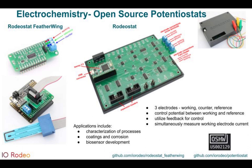So you might ask: what is a potentiostat? A potentiostat is a three-electrode electrochemical sensor. The idea is basically to control the potential between the working and reference electrodes using the counter electrode as an actuator, utilizing feedback to do this. It constantly measures the potential between the working and reference electrodes and adjusts the counter electrode to maintain that at the desired value, while simultaneously measuring the working electrode current.